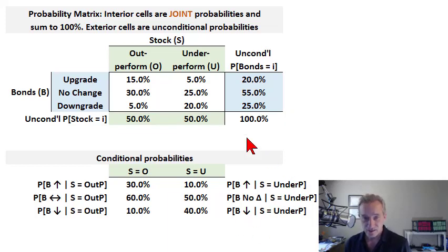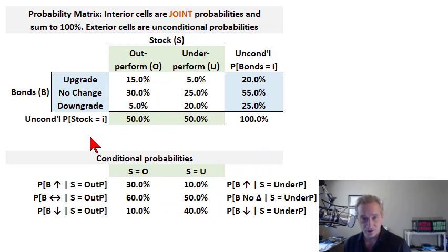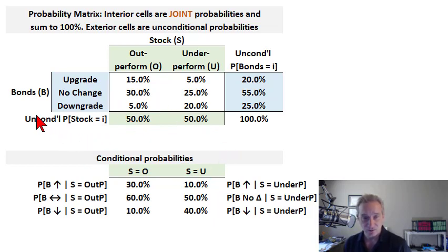There are three key probability terms: joint, unconditional, and conditional. My previous video took a long tour through the construction of them under a scenario. They're important, so I wanted to briefly summarize those three terms using two variables.